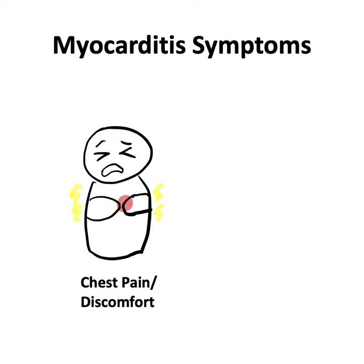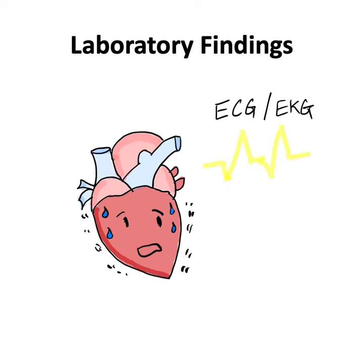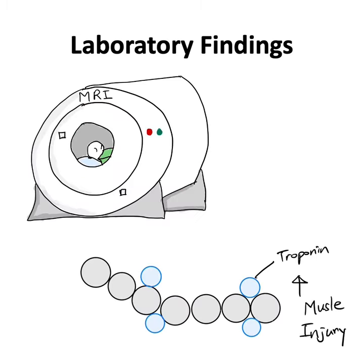A confirmed myocarditis diagnosis includes symptoms of chest pain or discomfort, shortness of breath, and increased heart rate. Laboratory findings also show abnormal ECG or EKG, abnormal MRI, and increased troponin levels due to heart muscle injury.